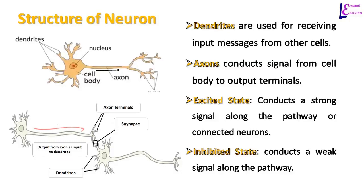The figure to the left of the slide shows the structure of neurons in the human brain. Dendrites are close to the cell body and are used for receiving messages or information from other cells. The nucleus processes that information, assigns weight to it, and passes it to other neurons through axons. A neuron in an excited state produces a strong signal, which means the signal is given high importance by the cell body or nucleus.